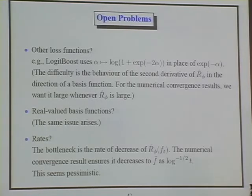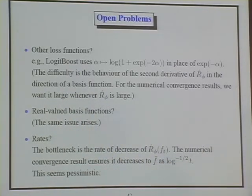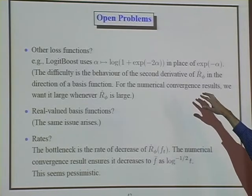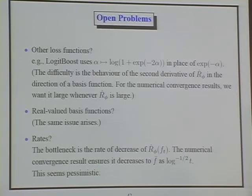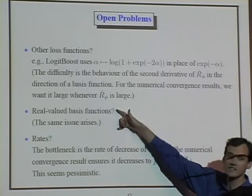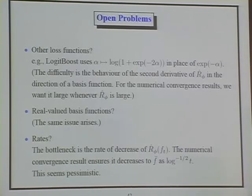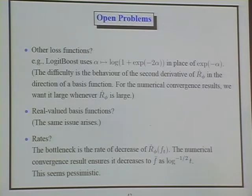There are some natural extensions. There are other algorithms that work with slightly different loss functions that have been argued to have nice properties. Does this argument tell us anything about their asymptotic behavior? In fact it doesn't. The difficulty is that we don't have information about the second derivative of the empirical phi risk in the direction of a basis function — we need a nice lower bound on this second derivative. This is problematic for other loss functions. The exponential seems to be nice. The same problem arises when we consider real-valued basis functions: with plus-or-minus-one basis functions things work, but not when you allow real-valued basis functions.